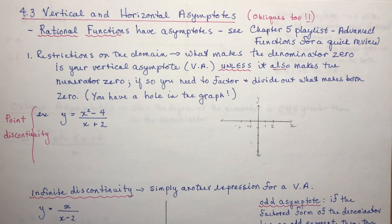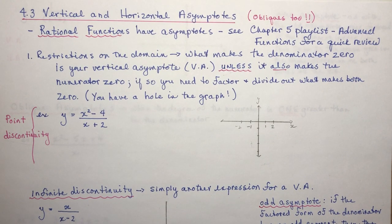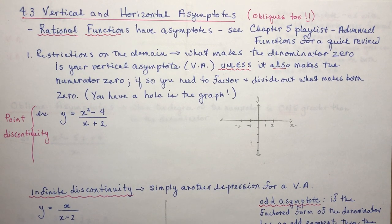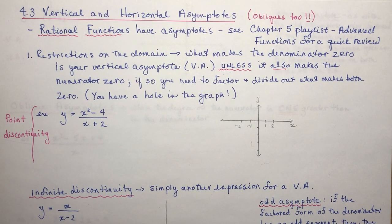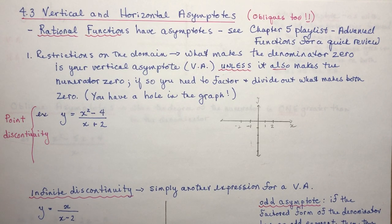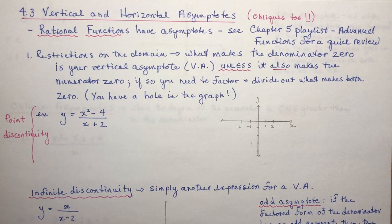4.3 is vertical and horizontal asymptotes — that's the title of the lesson, but it also includes oblique asymptotes. I'm going to go over all the different types of asymptotes, and then I'll do a 4.3 part 2 where I will do a complete analysis of a rational function that has an oblique asymptote.